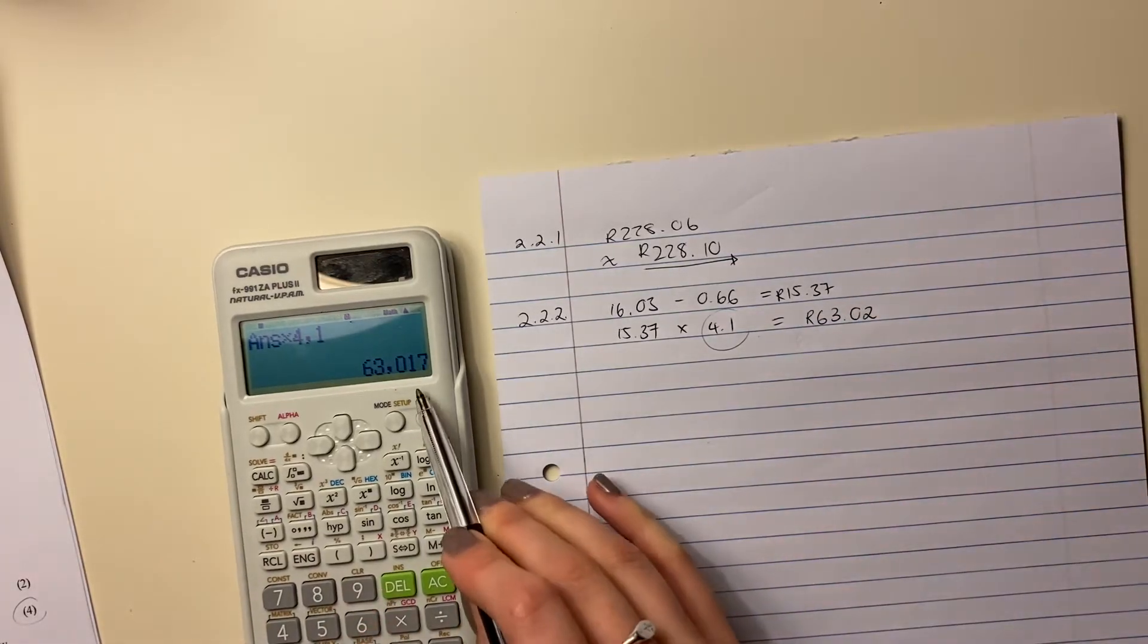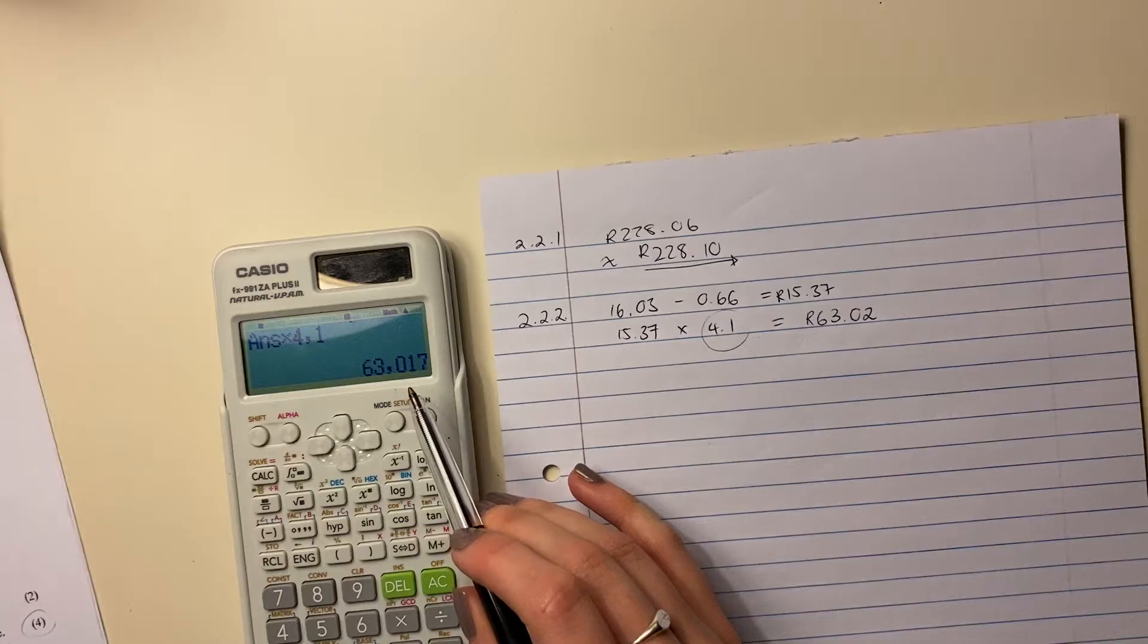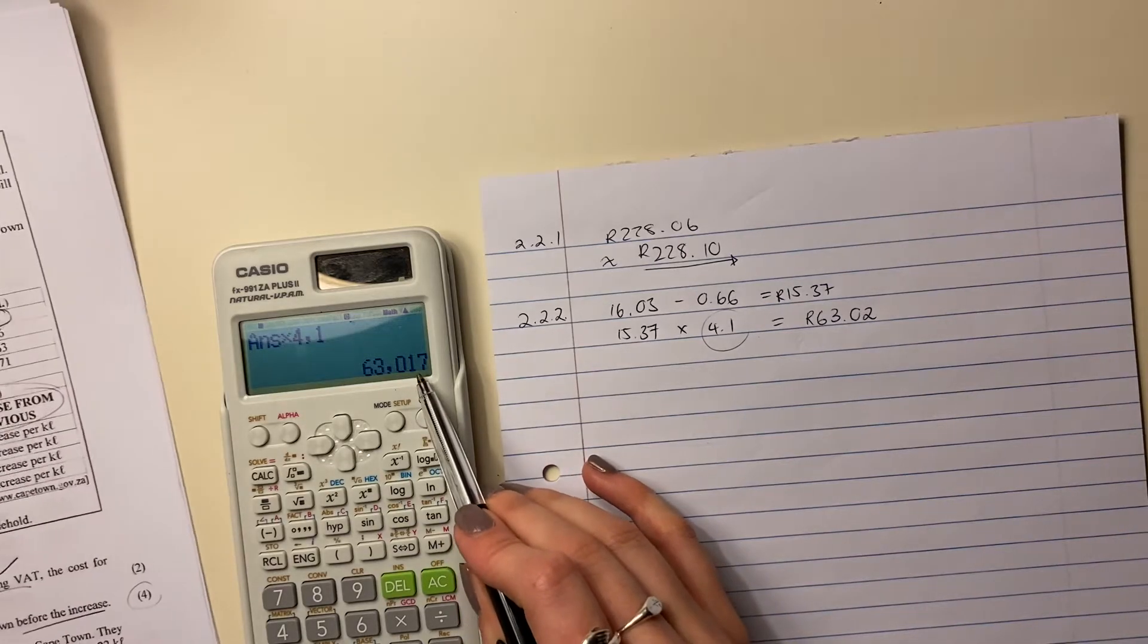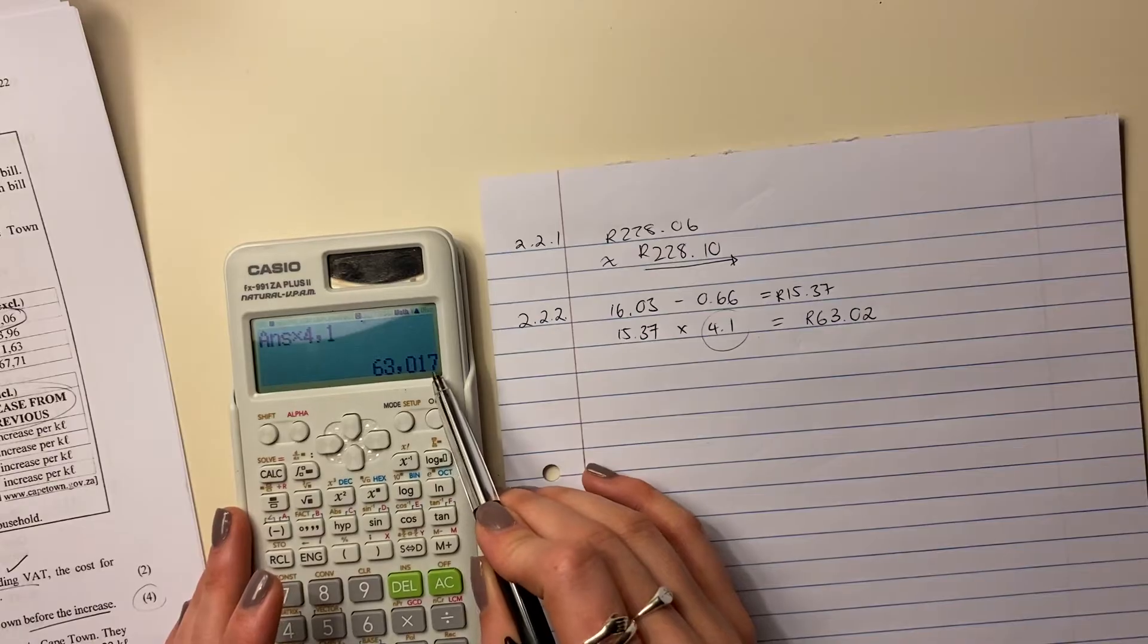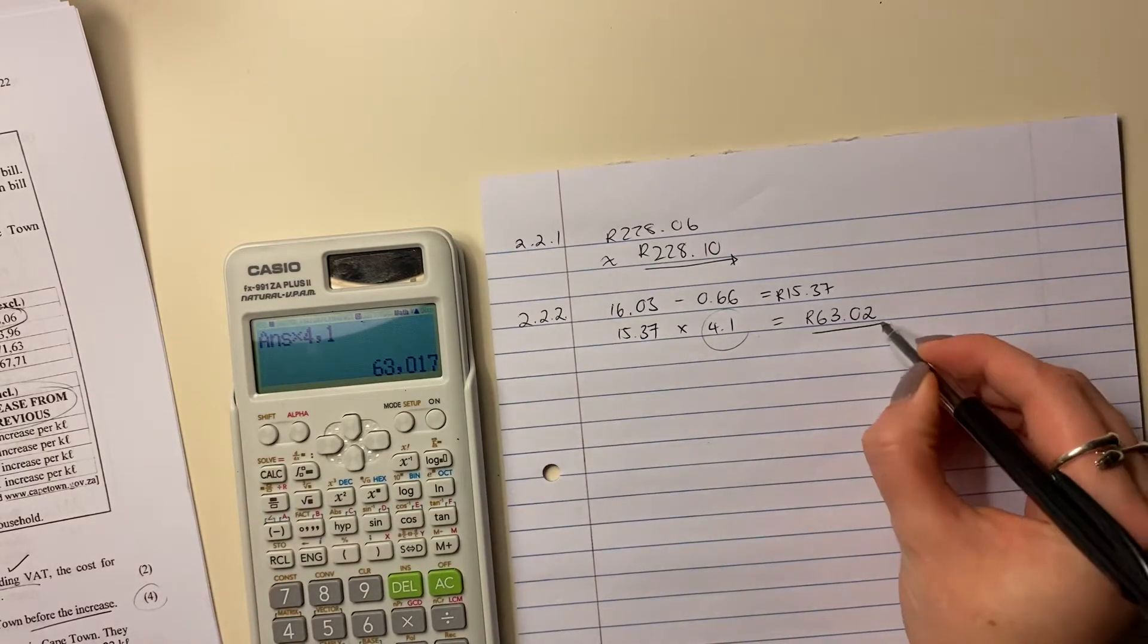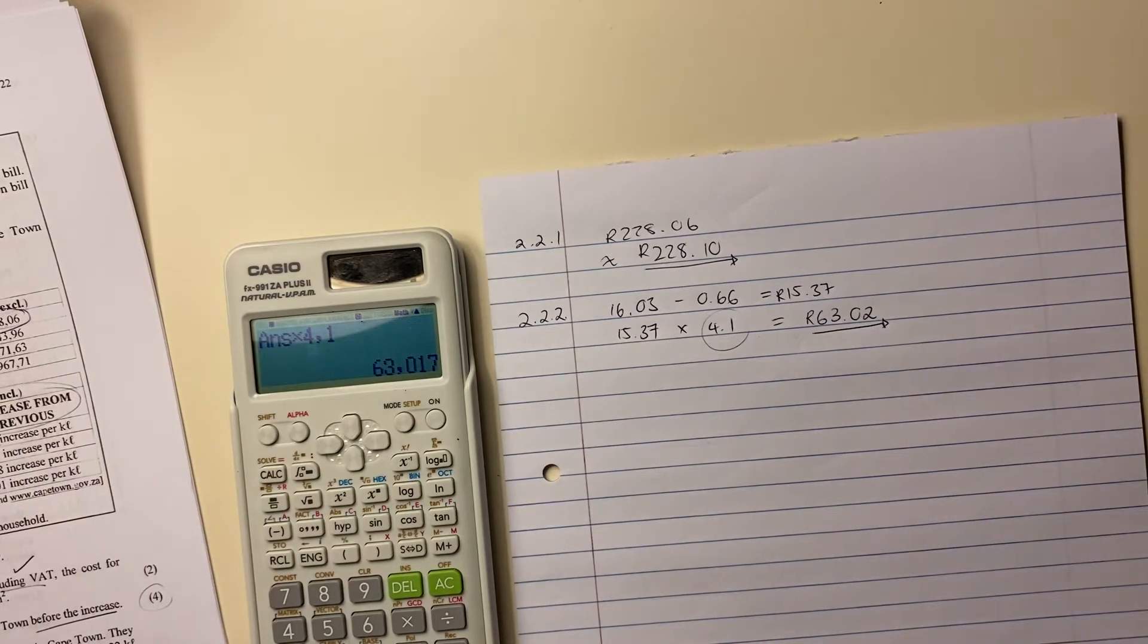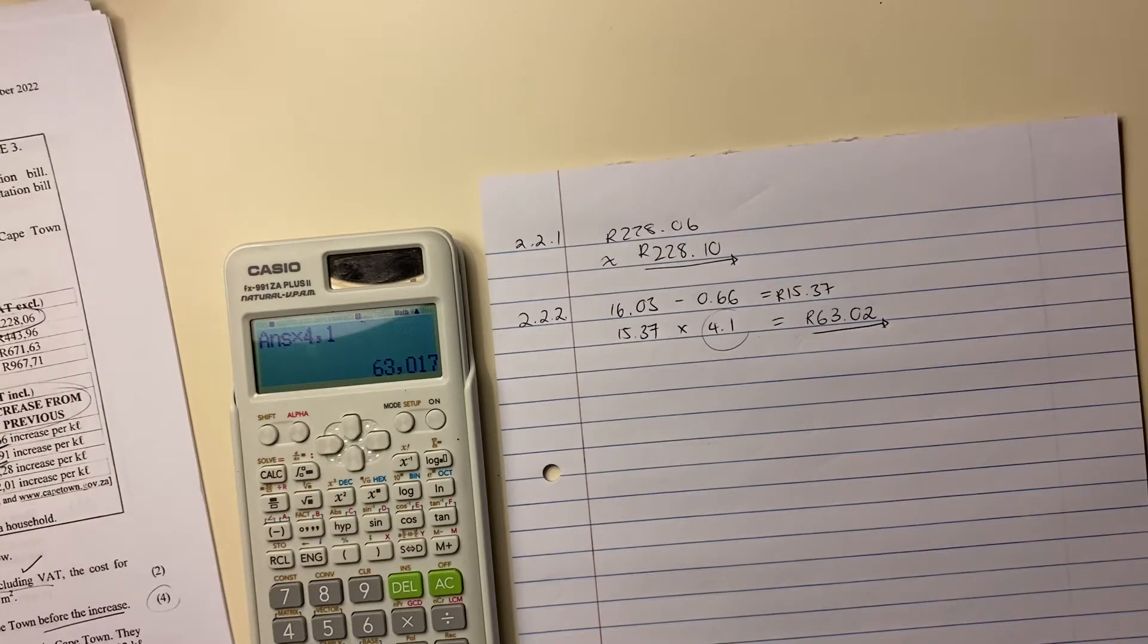So the total amount is 63.02. Why is it 0-2? Because remember with currency, we always round off to two decimal places. So here I'm looking at the third decimal place. It's above five, so we round it up and it becomes 0-2. And that is your answer.